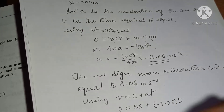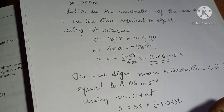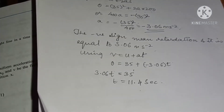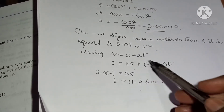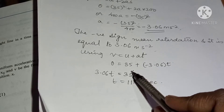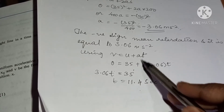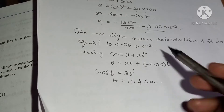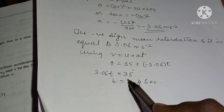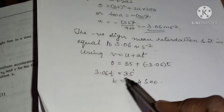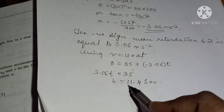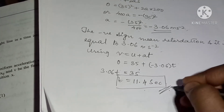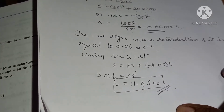Now finding the time to stop using v = u + at: 0 = 35 + (−3.06)t, so 3.06t = 35, giving t = 35/3.06 ≈ 11.4 seconds. That is how long the car takes to come to rest.